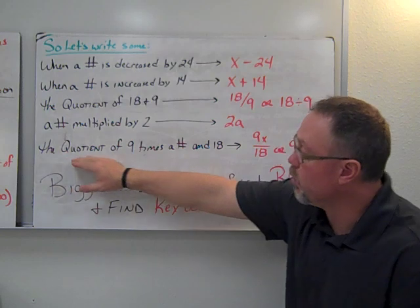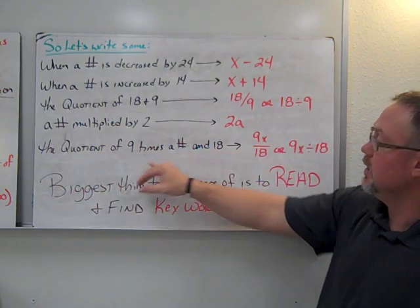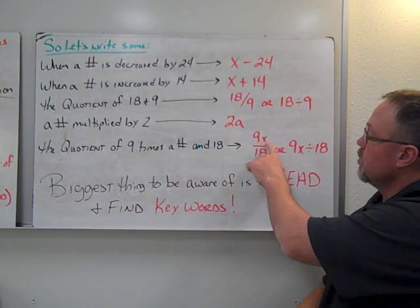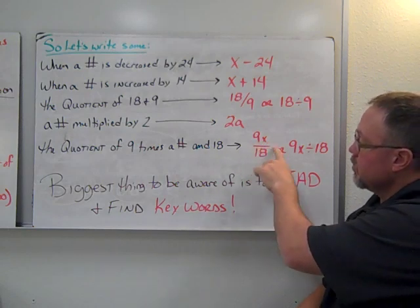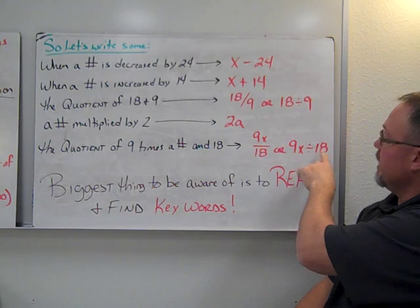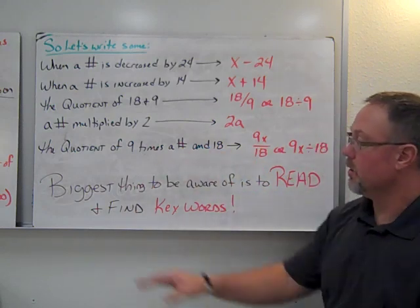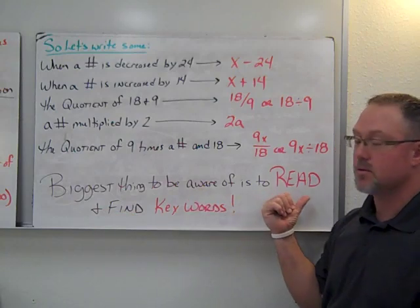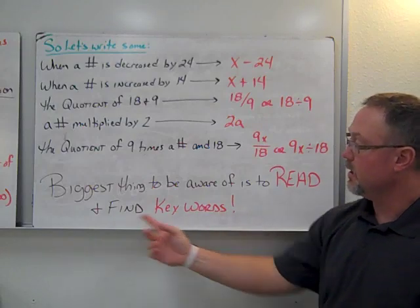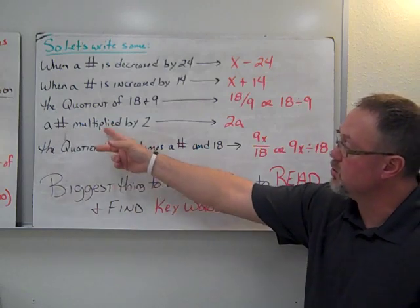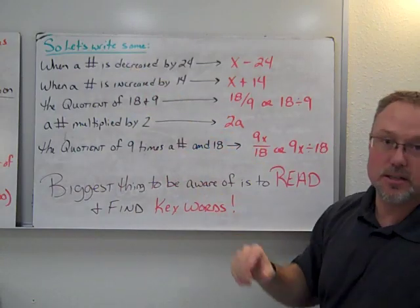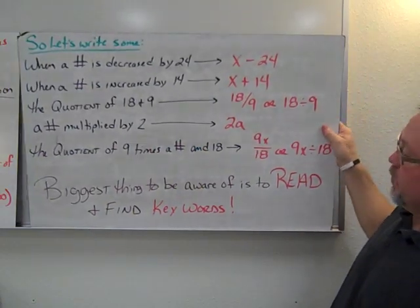The last expression example: 'the quotient of 9 times a number and 18.' There are two parts here — 9 times a number, and a quotient involving 18. So 9 times the number, divided by 18, gives us the quotient. One of the biggest things to remember is to read the problem through — you may need to read it 2 or 3 times — and look for key words like difference, quotient, multiplied, increase, decrease, and times.